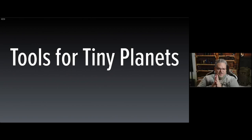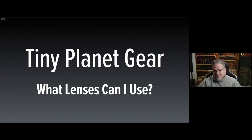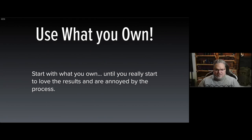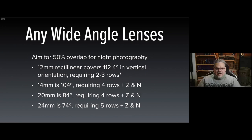Now let's talk about what you need to make thrilling tiny planets, starting with gear. First, lenses. Honestly, start with what you own — don't go out and buy anything special until you know you really want to do this. You can use any wide-angle lens: 12mm, 14mm, 20mm, and 24mm are all examples I've used to make tiny planets.